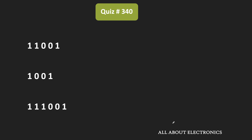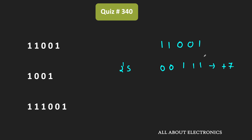All three numbers are in 2's complement form. If we talk about the first number, its MSB is equal to 1, which indicates that the number is negative. So if we find the 2's complement of the number, we will get the corresponding positive number. If we take the 2's complement of 11001, then its 2's complement is equal to 00111, which corresponds to +7.